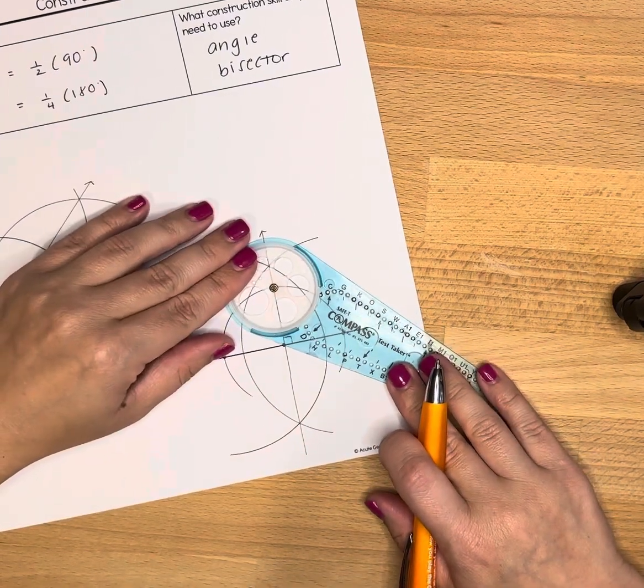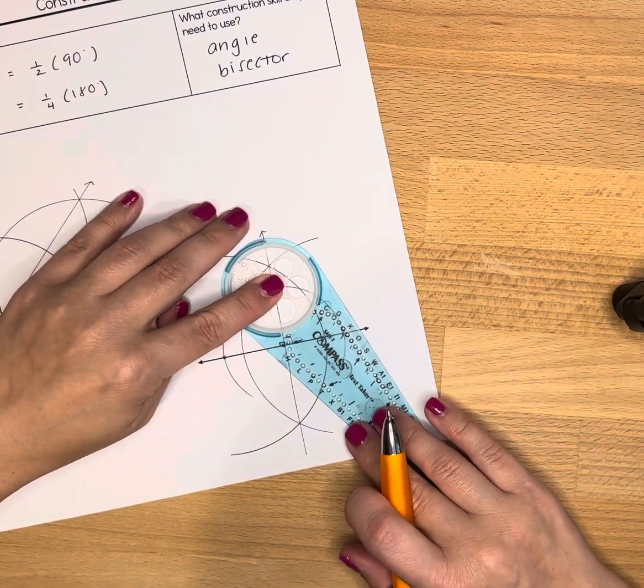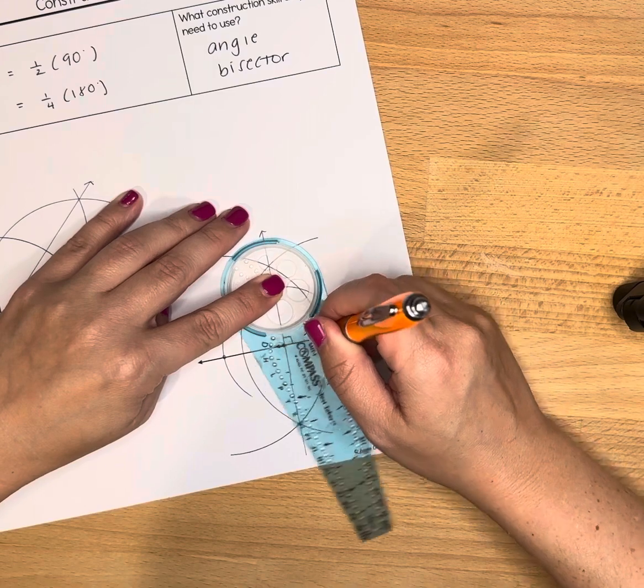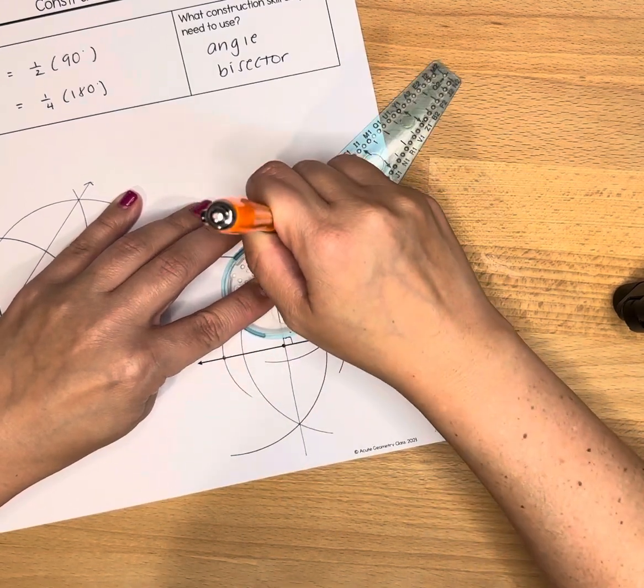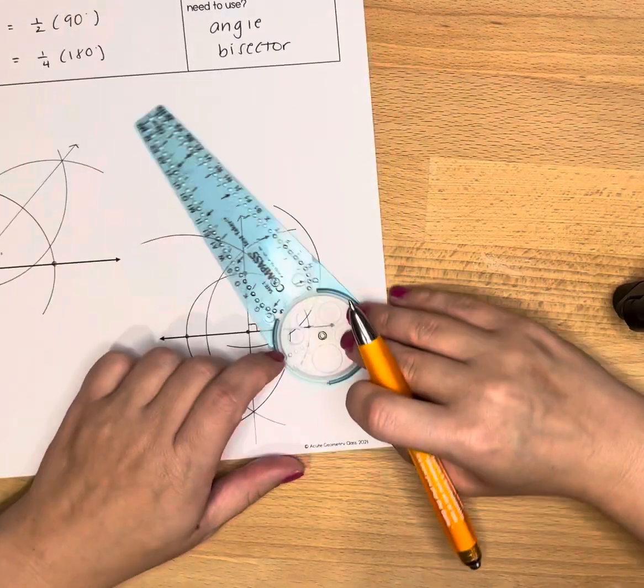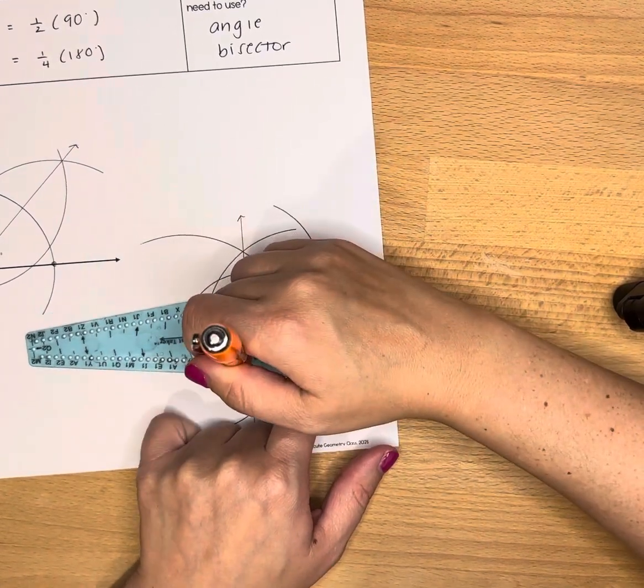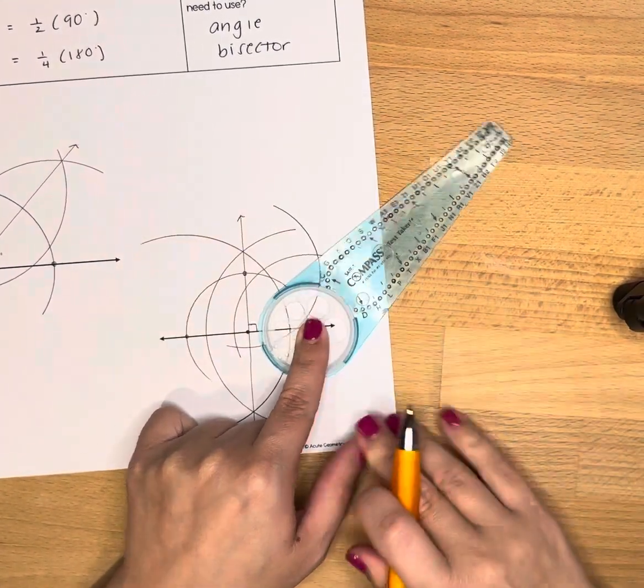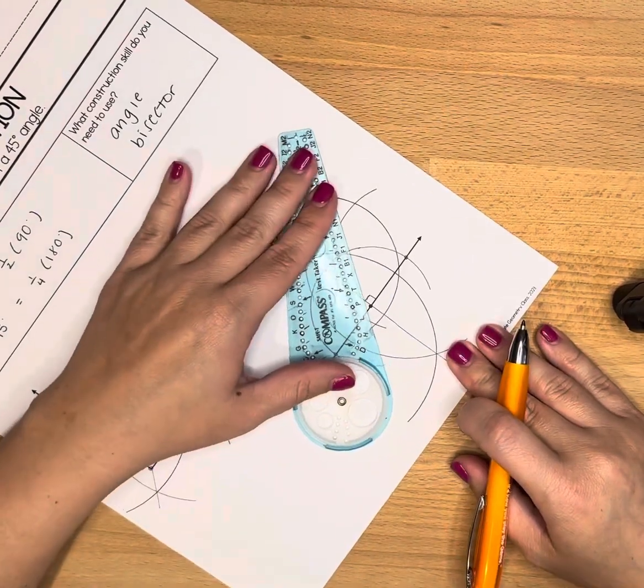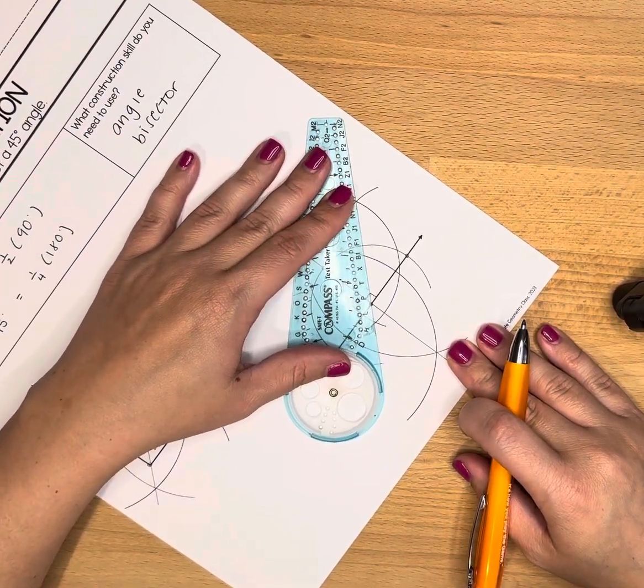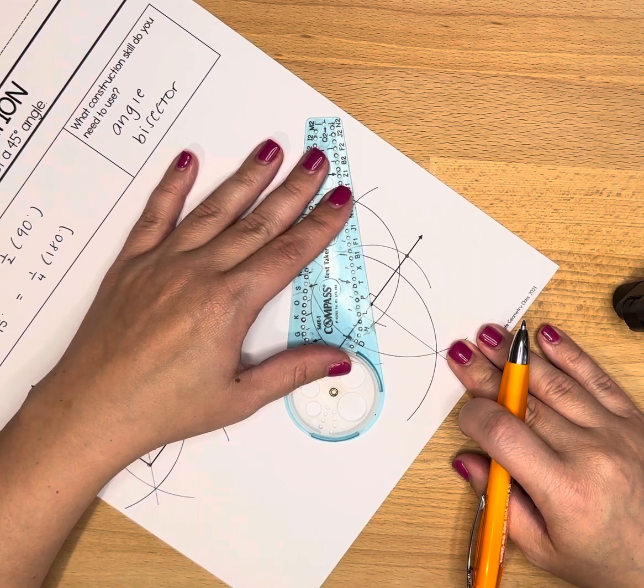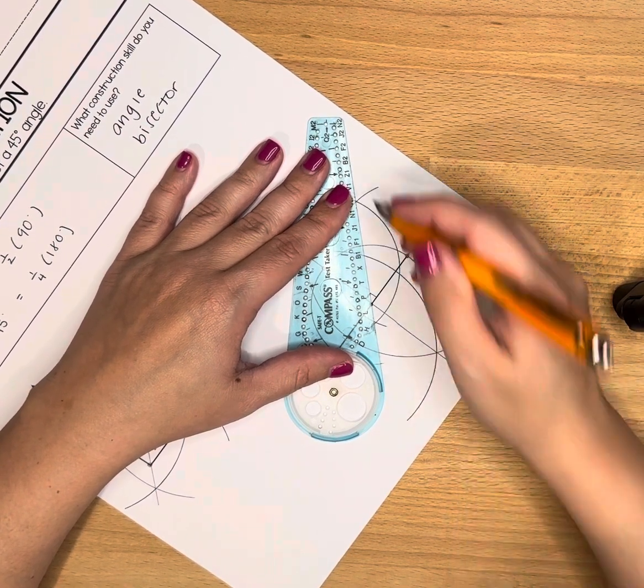Last, we're going to connect those intersections, and once again they should go through your original vertex for this angle.